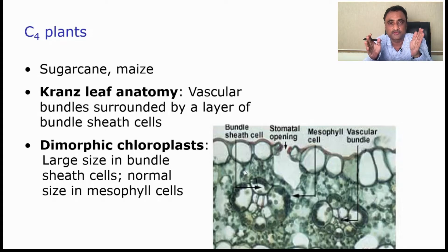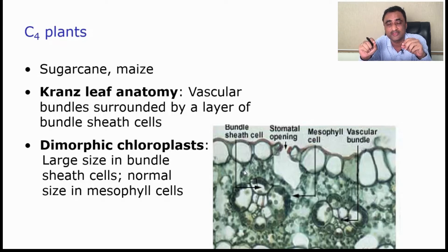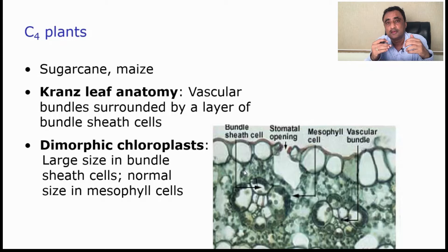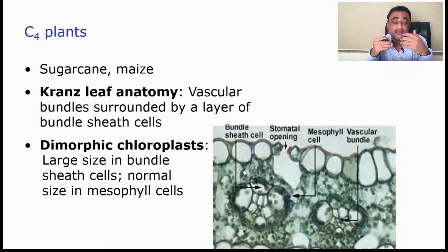Both chloroplasts have been assigned different roles. In a simplistic manner, bundle sheath chloroplasts are primarily for performing the Calvin cycle, and mesophyll cells are primarily concerned with performing the light reactions. That is why there is differentiation in the job, thereby making it more and more efficient.